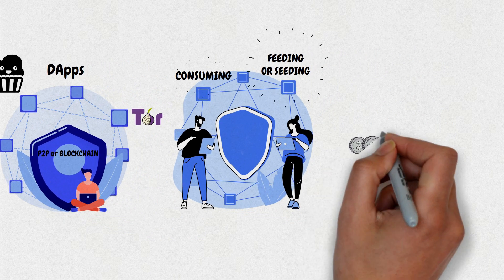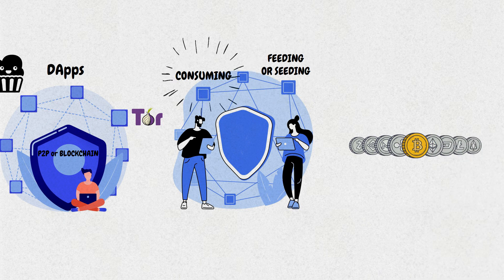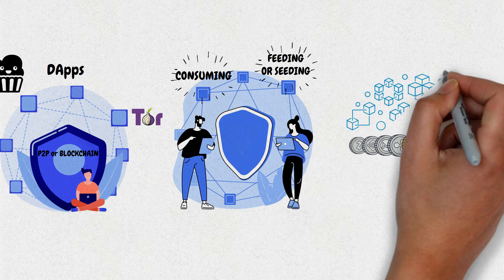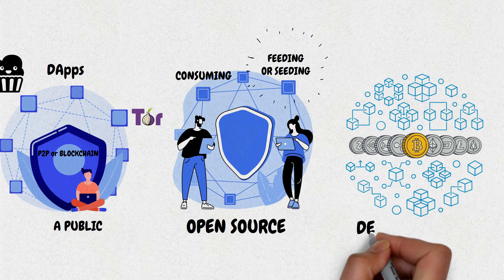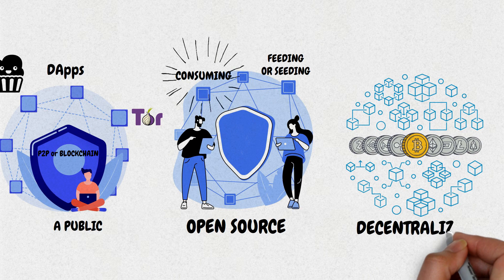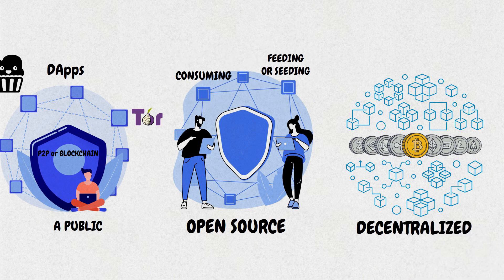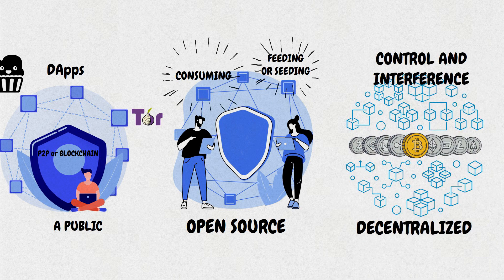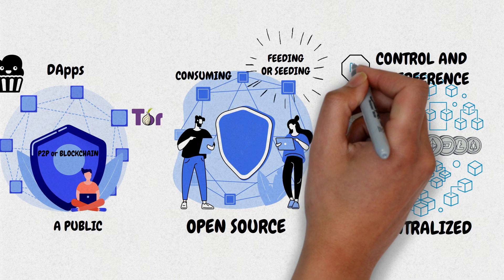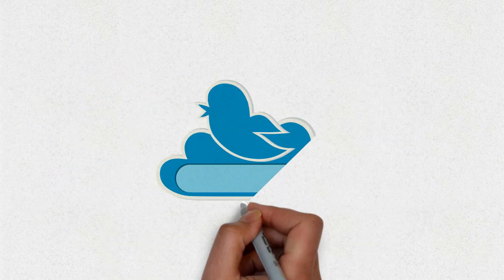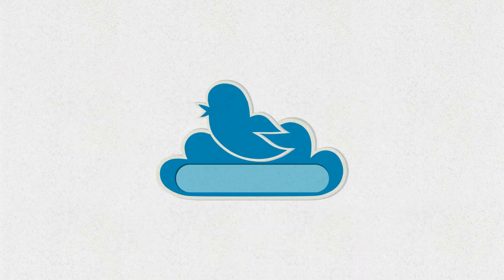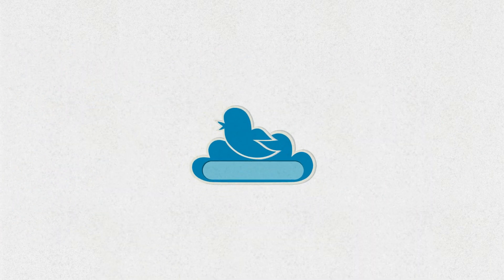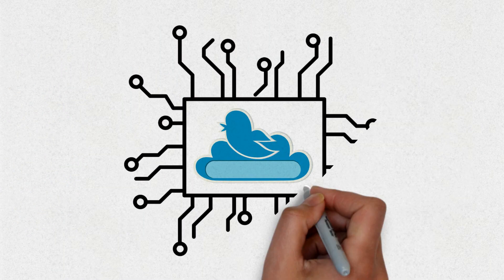In the context of cryptocurrencies, dApps run on a blockchain network in a public, open-source, decentralized environment and are free from control and interference by any single authority. For example, a developer can create a Twitter-like dApp and put it on a blockchain where any user can publish messages.